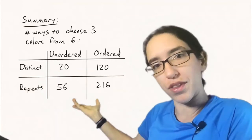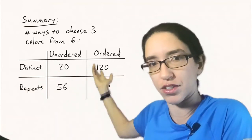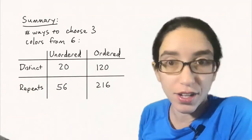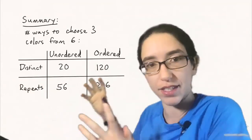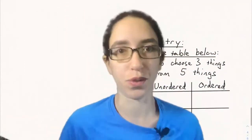And so I've put the answers we've gotten throughout this lecture in this table: 20, 56, 120, and 216. You see they're all very different and so the goal of this week is going to be filling in this table in general with a formula in terms of n and k for each one of those.